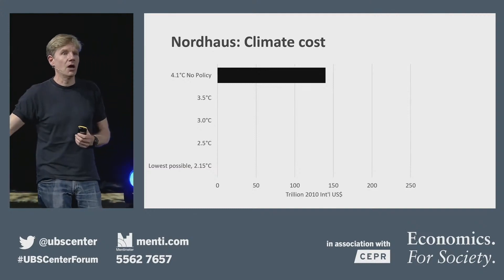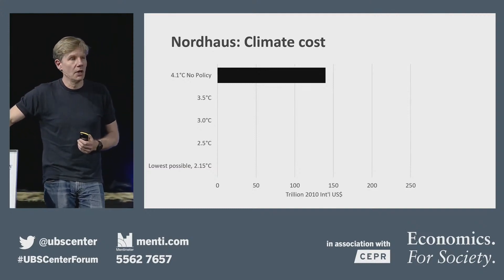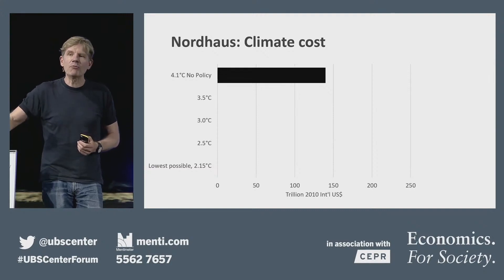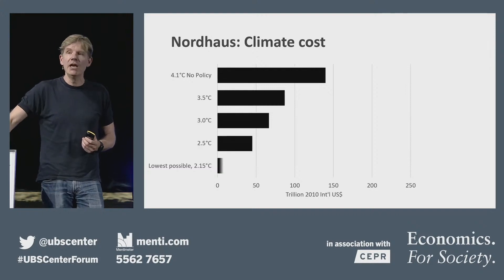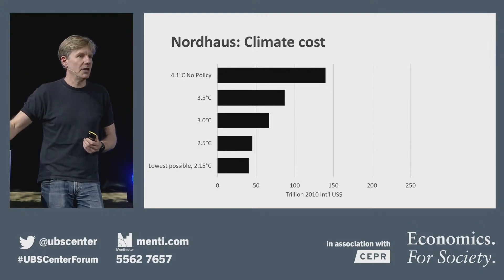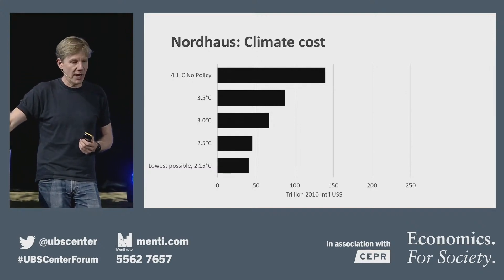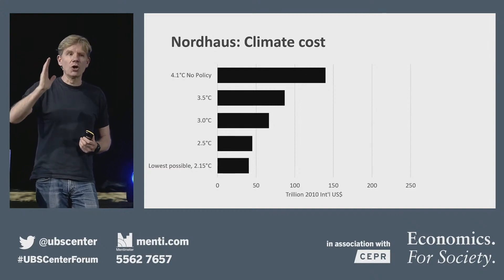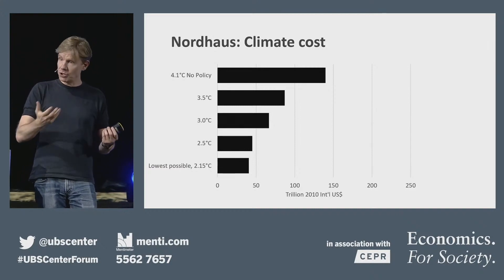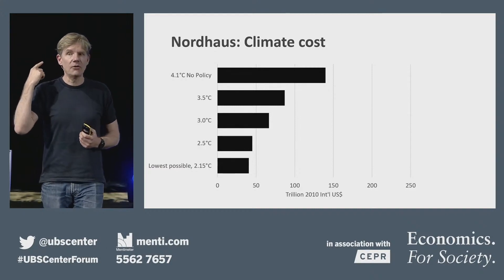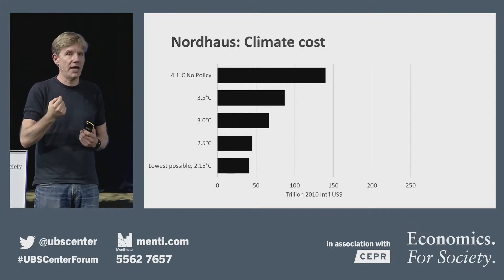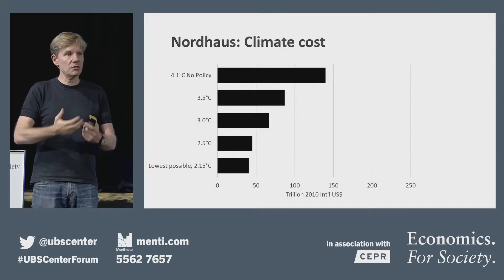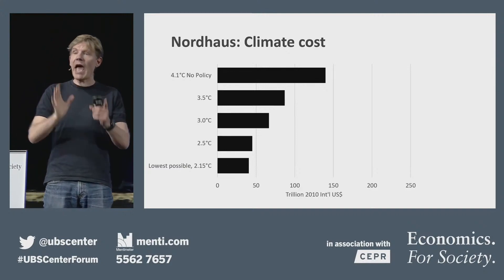That's more than a whole year's worth of the global economy right now. If we reduce temperatures down to 3.5, 3, or 2.5 degrees — his model can only go to 2.15, which probably also sounds about right — the damages go smaller and smaller, as you'd expect. This, I think, is the picture of how we think about climate change today: lower temperatures, less damages. That's absolutely true.